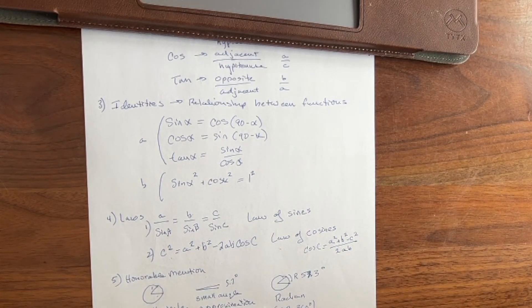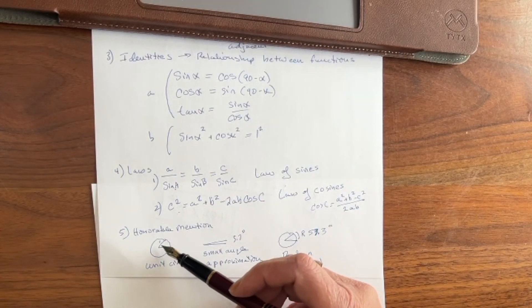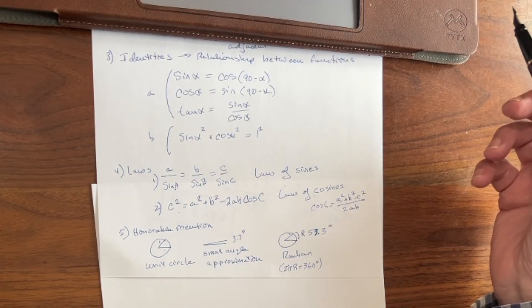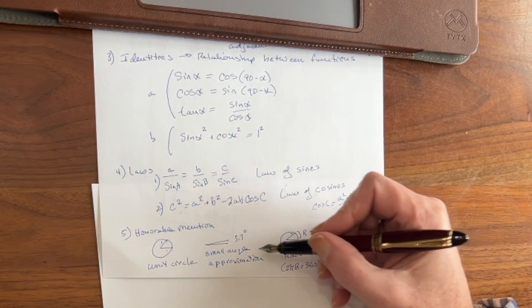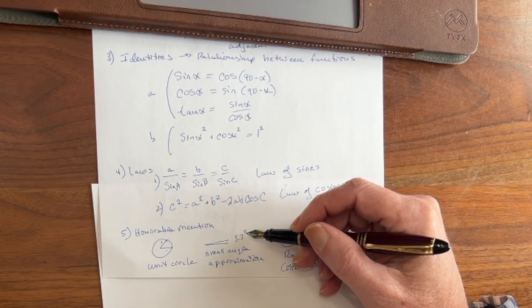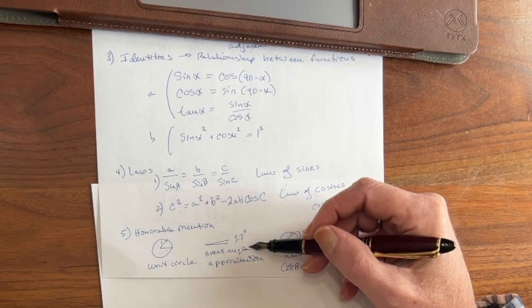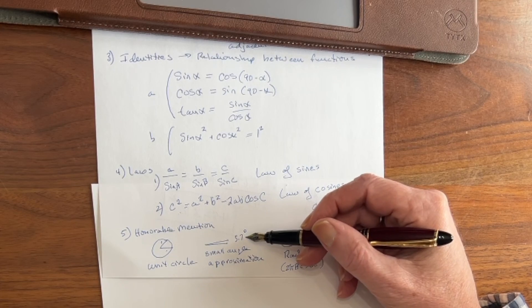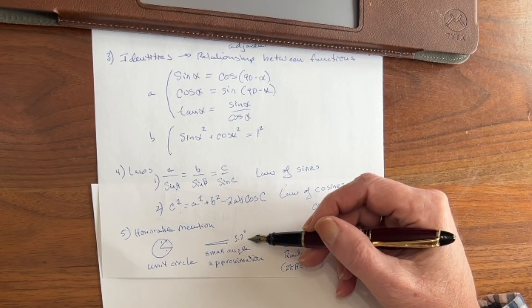And finally, we've got a couple of honorable mentions here. A unit circle is a circle of radius one. The one has no units. It's whatever unit you want it to be. Now the small angle approximation: if we go below about 5.7 degrees, we can estimate the sine and the tangent of that angle simply by calculating the number of radians in the number of degrees.